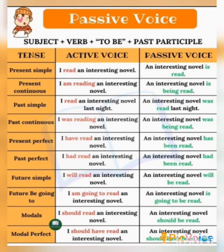'I read an interesting novel last night' — this is simple past. In passive voice: 'An interesting novel was read by me last night.' For past continuous: 'I was reading an interesting novel' becomes 'An interesting novel was being read by me.' Remember, '-ing' means 'being' will be added.